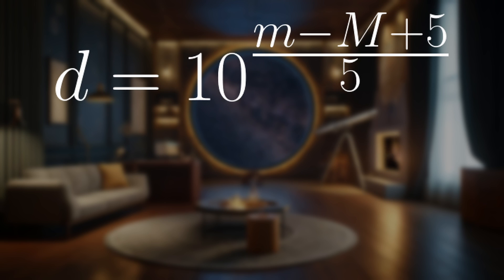In astronomy, we have a certain group of objects where we know exactly how much light they emit. If we know exactly how much light they emit and we can measure how much light reaches us, then with the inverse square law we can determine how far away the object is. We can use this formula to determine the distance, where d is the distance, lowercase m is the apparent magnitude, and uppercase M is the absolute magnitude.